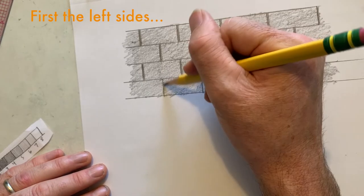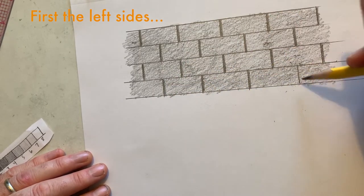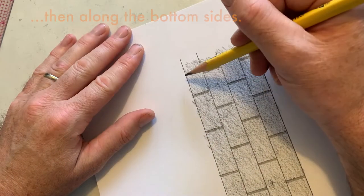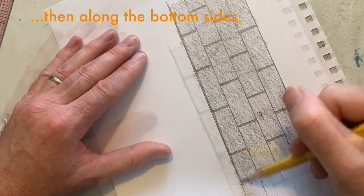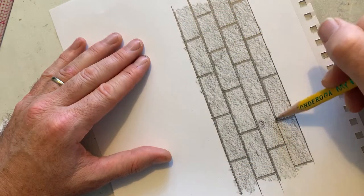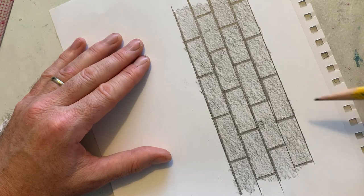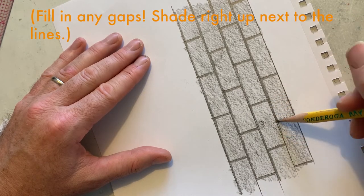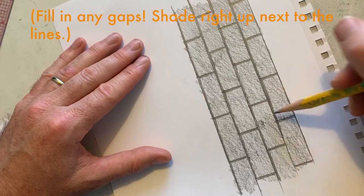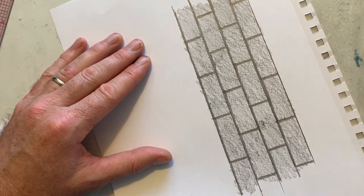I'll shade the left side of each brick first, and then I'll go back in and rotate my paper, and I'll shade the bottom of each brick. And it's really important to shade right up next to the line, so that if you have any gaps like that right there, go back in and fix them. Shade it all the way in, nice and dark and even. So by the time I'm done, I've got the left side and the bottom side of each brick shaded.